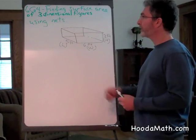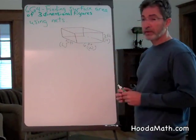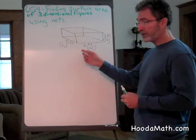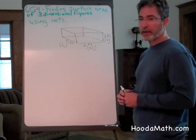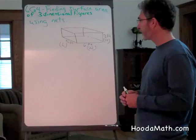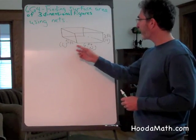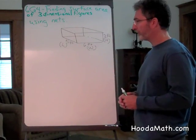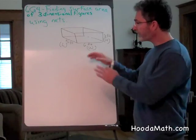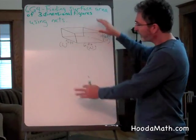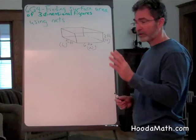Finding the surface area of three-dimensional figures using nets. This three-dimensional figure is a rectangular prism. Its dimensions are five feet by six feet by three feet. The net is formed by flattening out this figure into its six faces.